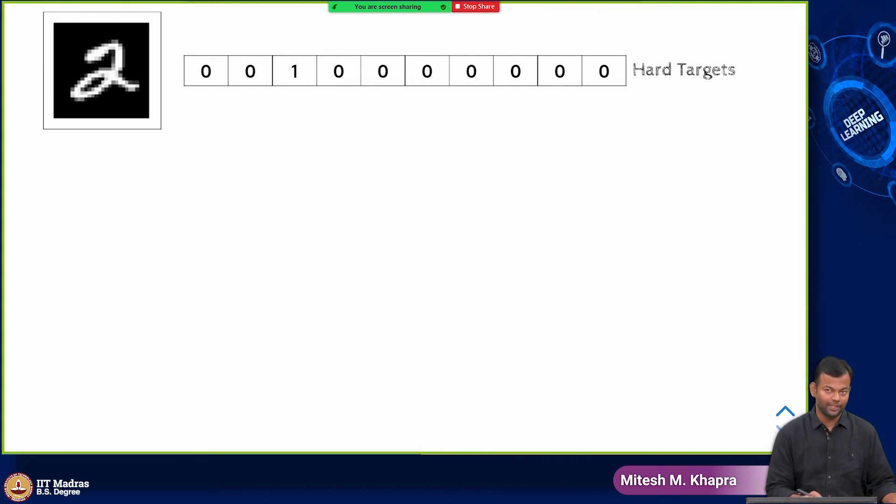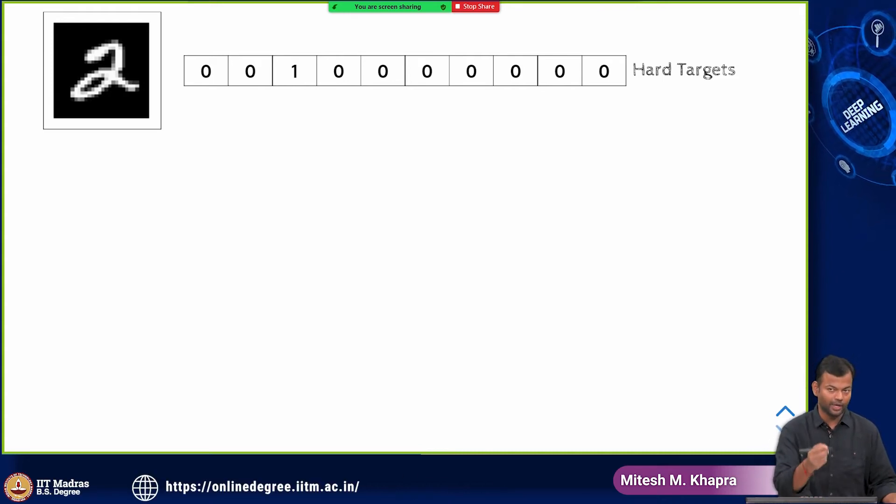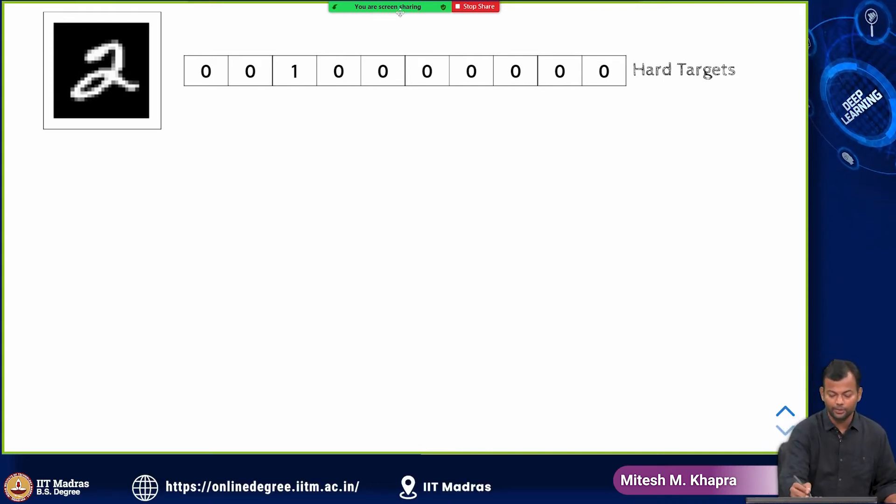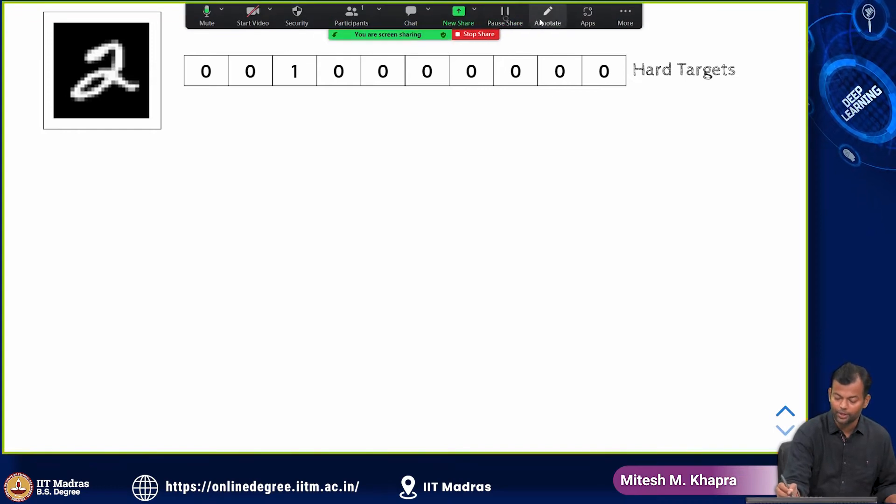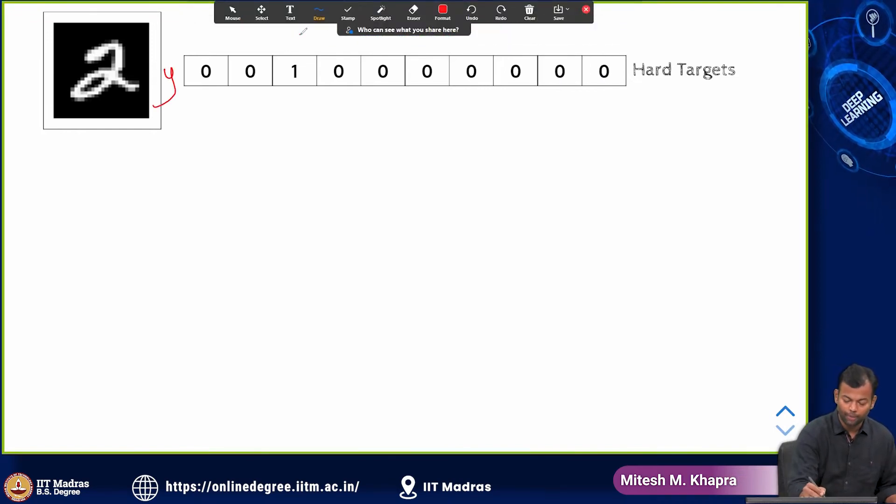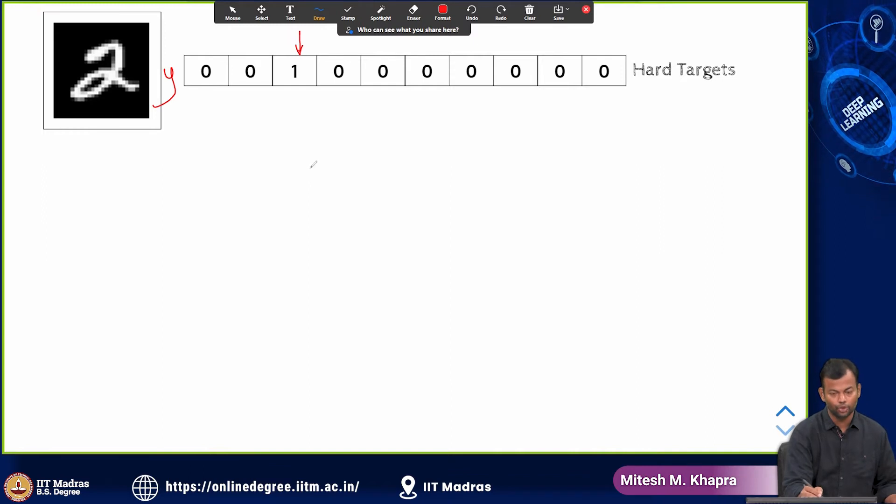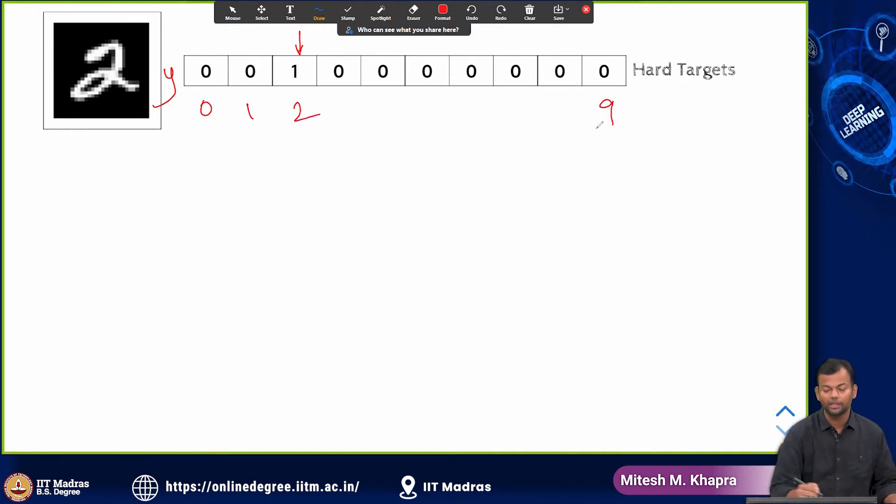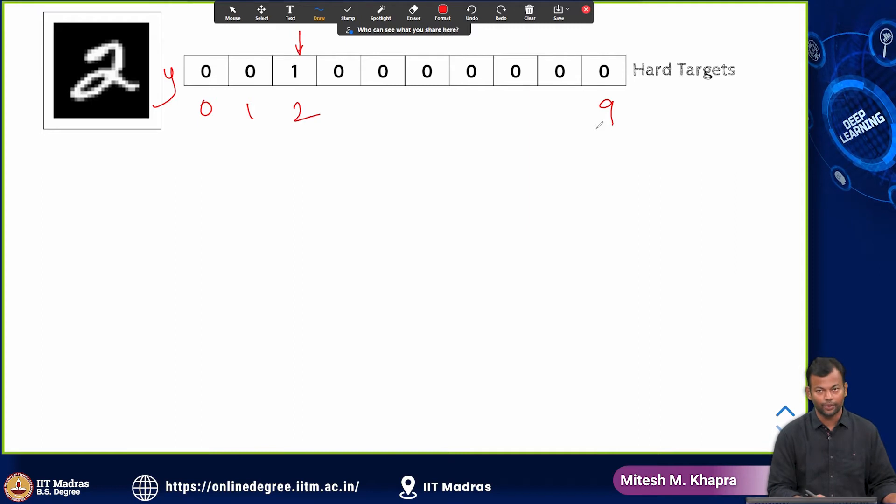This is what your output is. You are given a certain image. Let us look at the classification problem and this is what your true y is going to look like. All the probability mass is on the correct label which is 2 in this case. 0, 1, 2 all the way up to 9 and everything else is 0.